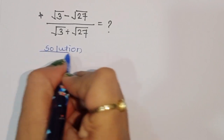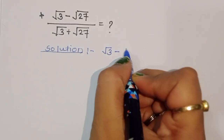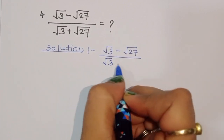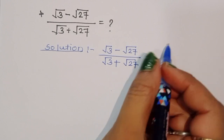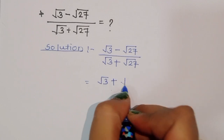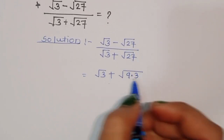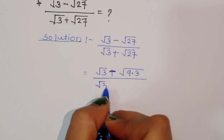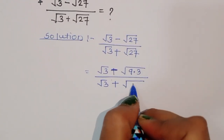The solution: square root of 3 minus square root of 27, divided by square root of 3 plus square root of 27. We can rewrite square root of 27 as square root of 9 times 3, since 9 times 3 is 27. This applies to both the numerator and denominator.